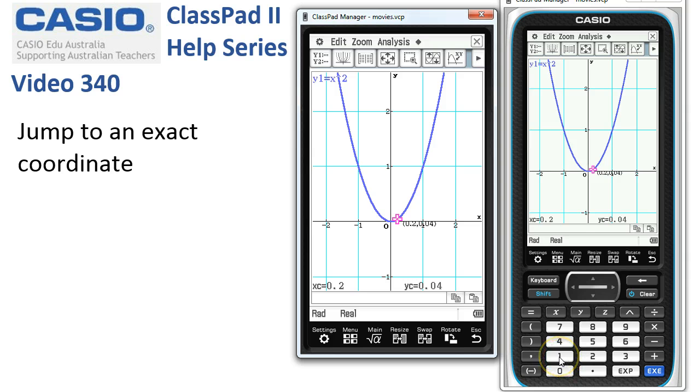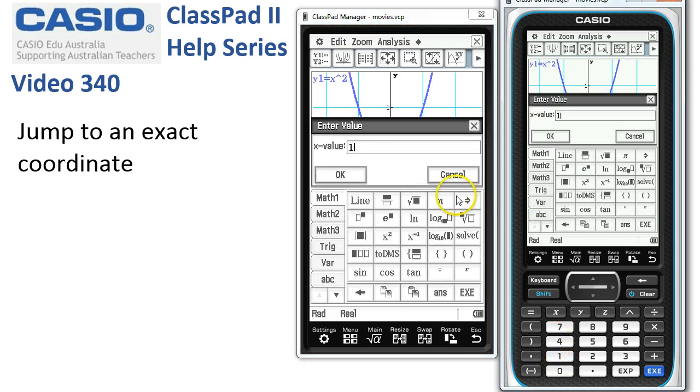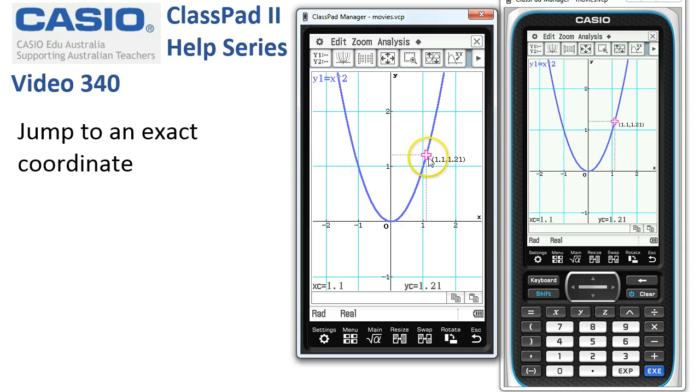If we then just go to the keyboard and type in 1, instantly up comes the enter value, the x value box. If I complete it with 1.1 and tap OK, ClassPad jumps straight to 1.1 and gives us the y coordinate of 1.21.